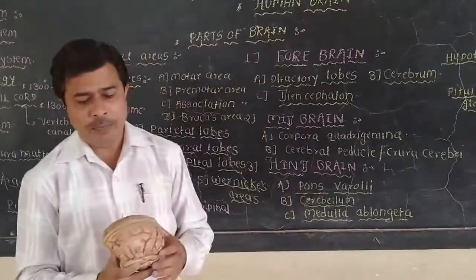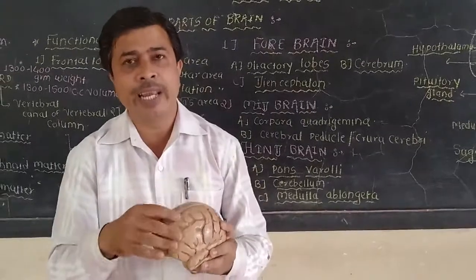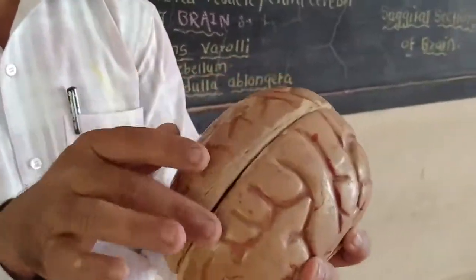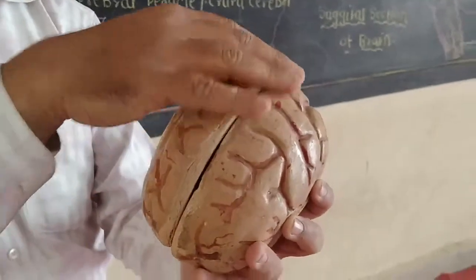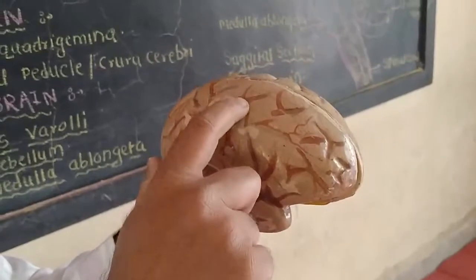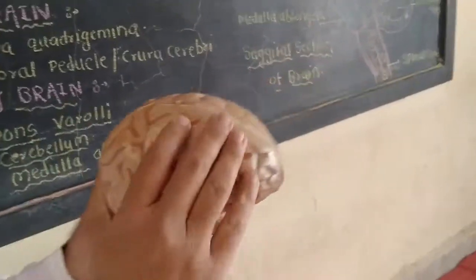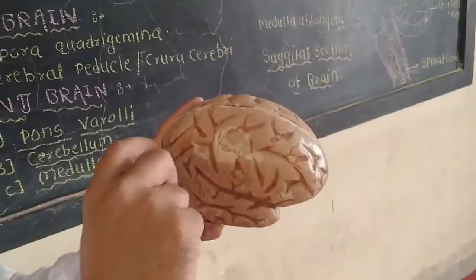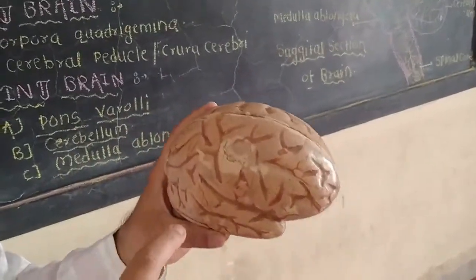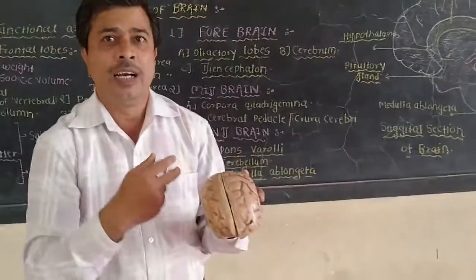The next part is the cerebrum. The cerebrum is the largest part of the brain, occupying about 85 percent of the brain. On the surface of the cerebrum, there are ridges called gyri and depressions called sulci. The number and arrangement of these gyri and sulci varies from person to person.